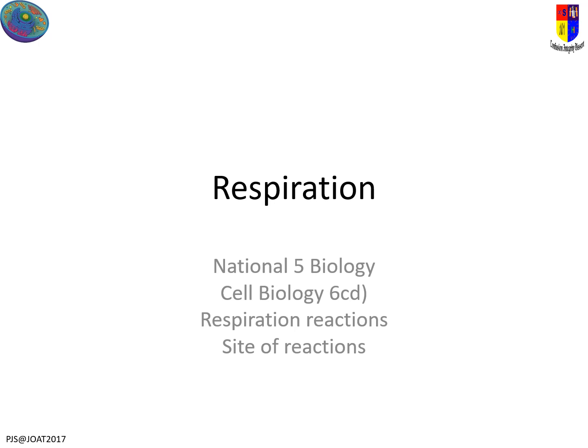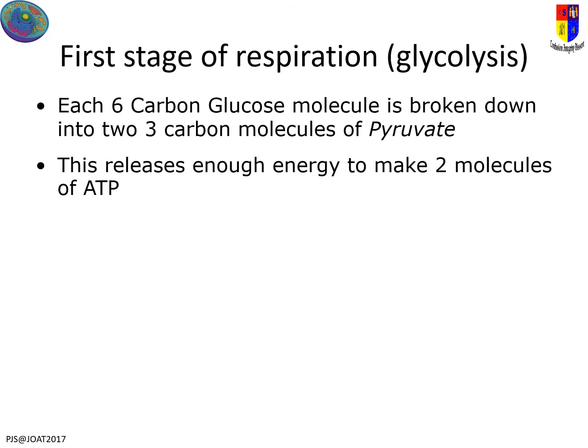We're looking at respiration and the detail involved in the reactions inside it. You need to know quite a lot of detail here. The first stage of respiration is called glycolysis. We start off with glucose, which is a six-carbon molecule, and you're going to split it into two three-carbon molecules. The name of that product is pyruvate — you'll often see this written as pyruvic acid in older books, but pyruvate is the term you need to use.